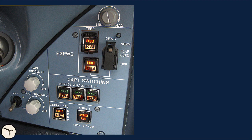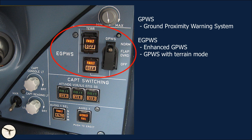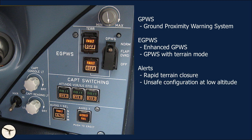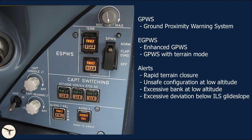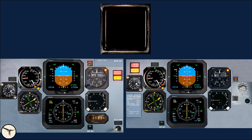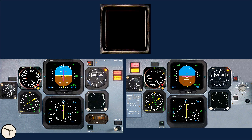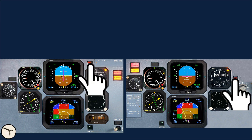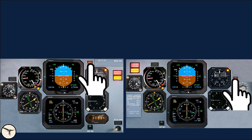The EGPWS (Enhanced Ground Proximity Warning System) panel combines the GPWS and terrain mode. The GPWS warns against rapid terrain closure, unsafe configuration at low altitude, excessive bank at low altitude, excessive deviation below ILS glideslope, and low altitude after takeoff. The terrain mode uses GPS to warn about terrain ahead. Near the altimeters, a push button shows a red GPWS light when a Ground Proximity Warning is triggered, and an amber GS light when a Glideslope Alert is triggered. Pressing the button while on the ground or above 1,000 feet with gear retracted activates a system test; pressing it in flight below 1,000 feet inhibits the Glideslope Alert.